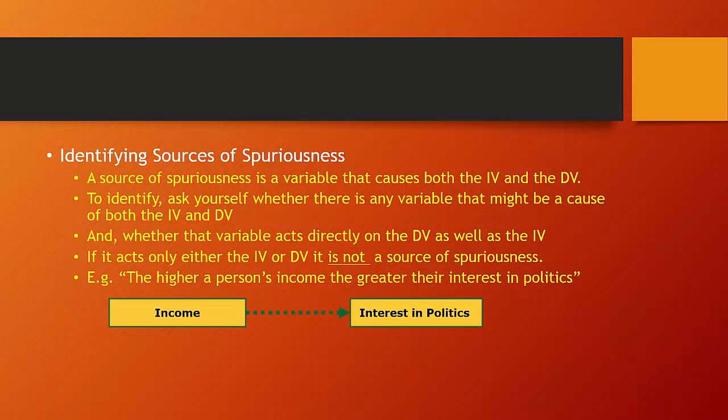A source of spuriousness is a variable that causes both the independent variable and the dependent variable. When you remove the common cause, the observed relationship between the independent variable and the dependent variable weakens or disappears. So to identify a potential source of spuriousness, you have to ask yourself whether there's any variable that might be a cause of both the independent and the dependent variable and whether that variable acts directly on the dependent variable as well as the independent variable.